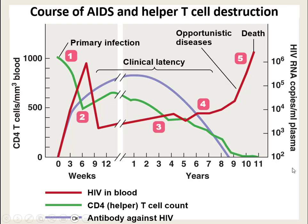Looking at the course of AIDS and T-helper cell destruction: right after initial primary infection, a lot of white blood cells are destroyed. This is usually within the first few weeks. The number of viruses skyrockets and our immune system starts making antibodies. Within one to two months after infection we start to see signs and symptoms — fatigue, waning immune system, things like thrush in the mouth and other fungal diseases.